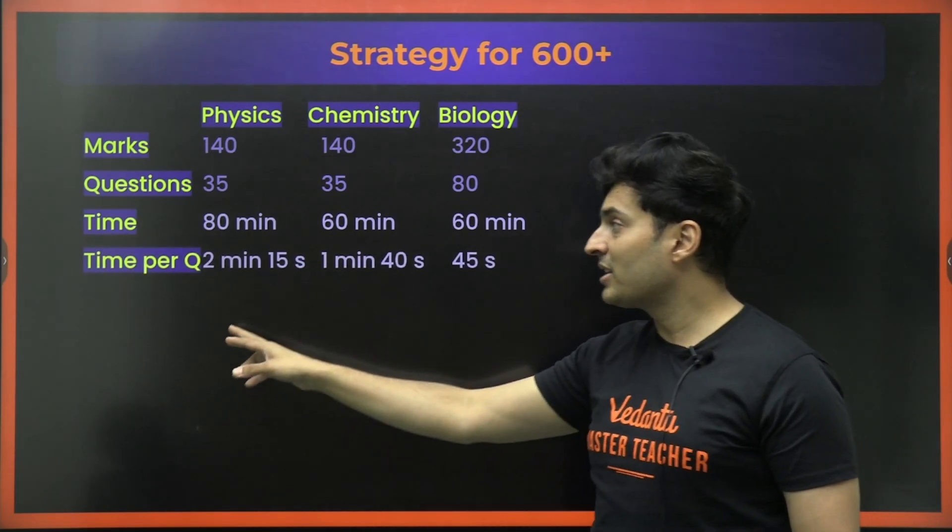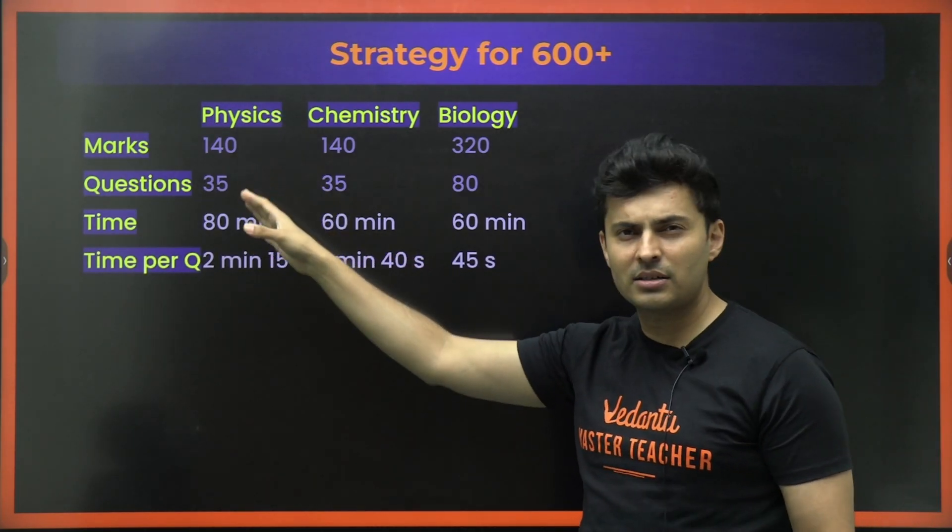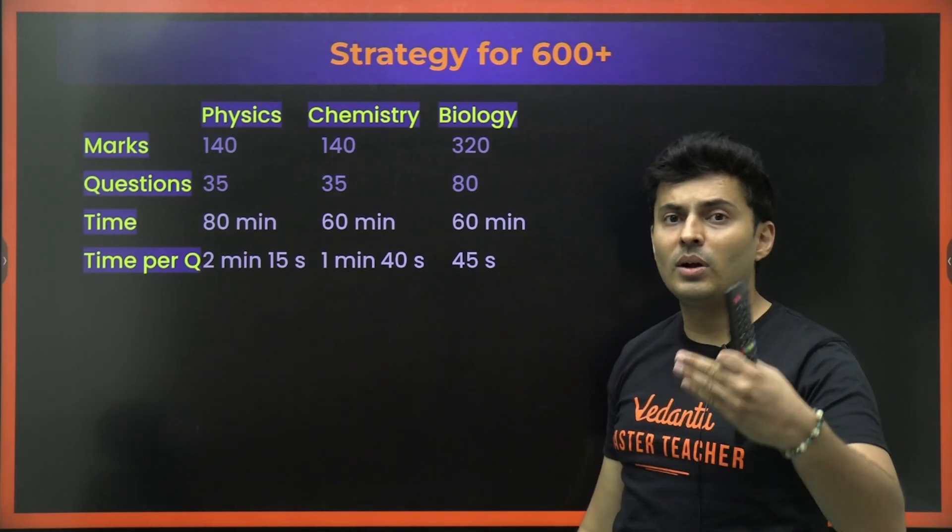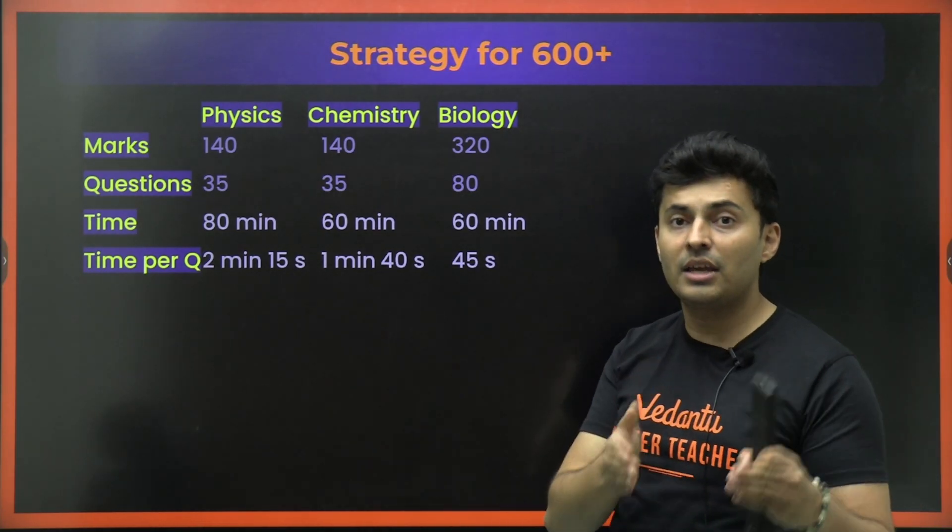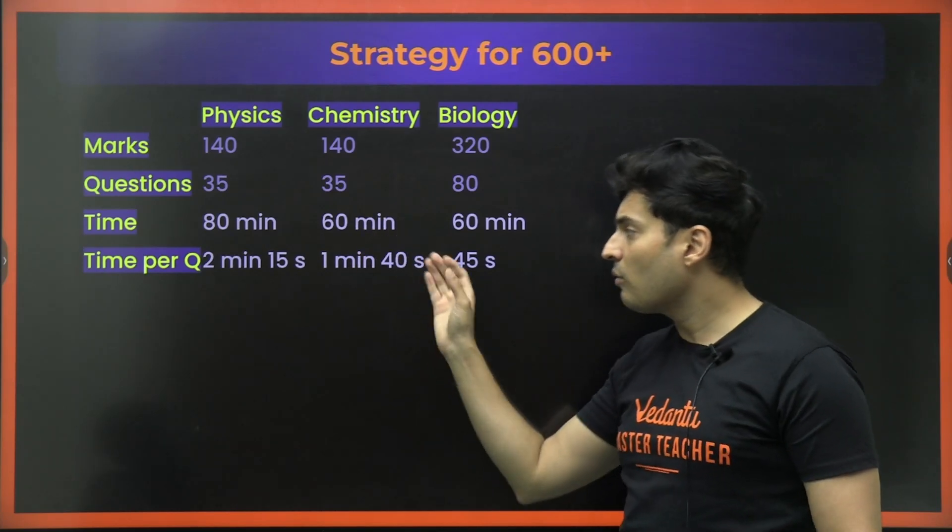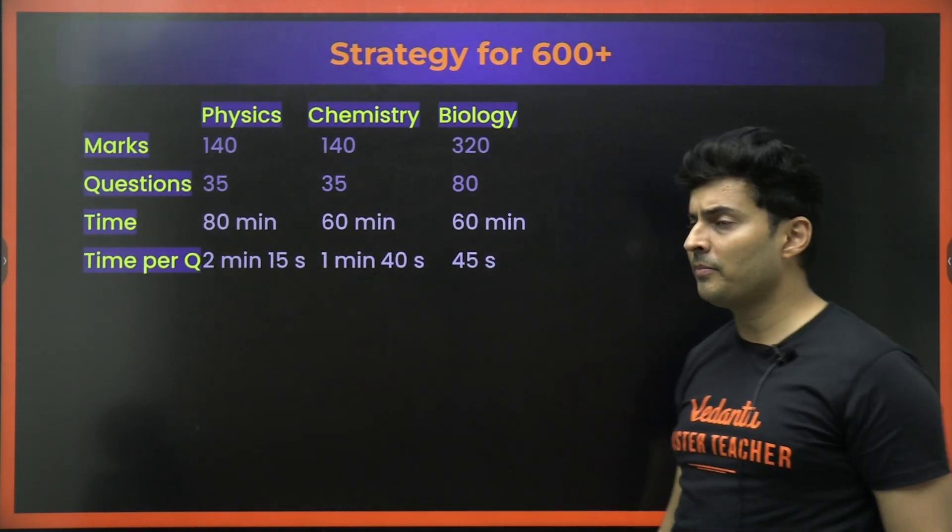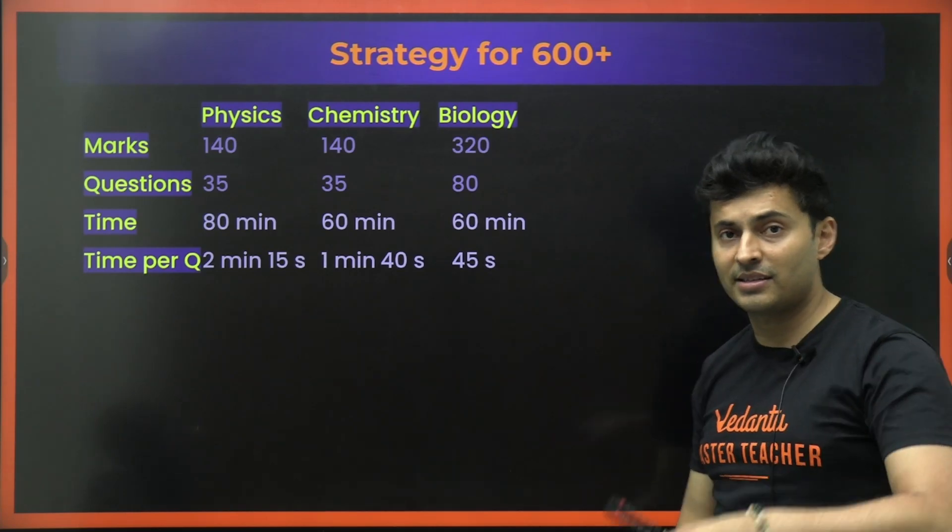Per question, how much time? 2 minutes 15 seconds, little over 2 minutes because it involves little bit of calculations and application of those concepts. Chemistry, 1 minute 40 seconds is a good enough time per question and in biology around 45 seconds.